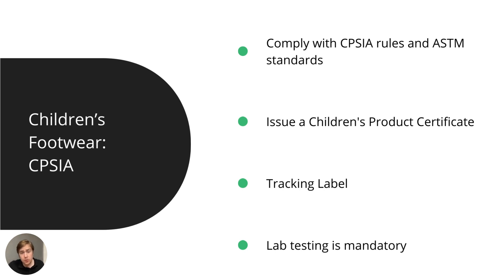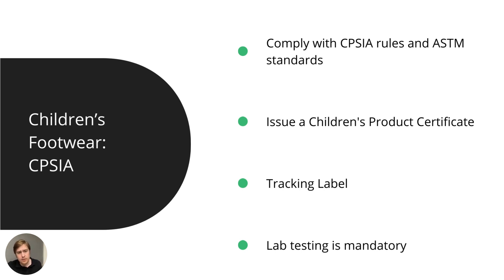You also need to ensure that units carry a tracking label — essentially a traceability label — including the product name, model, and a batch number. This allows market surveillance authorities to identify and recall a specific batch of defective footwear if there is ever a safety issue. You need a unique batch number for each batch sold in the US. Third-party lab testing is mandatory, and the testing must be conducted by a CPSC-accepted testing company — they don't have to be based in the US, but they must be on the approved list.